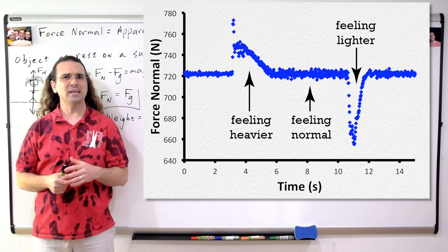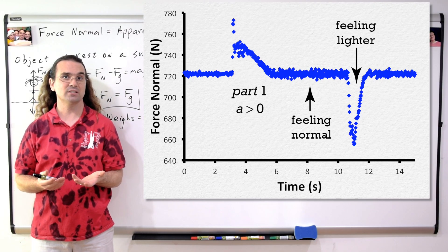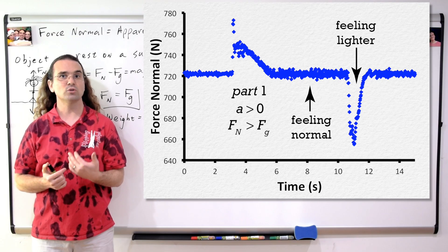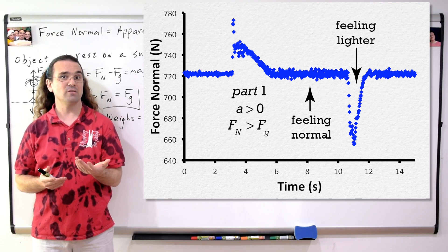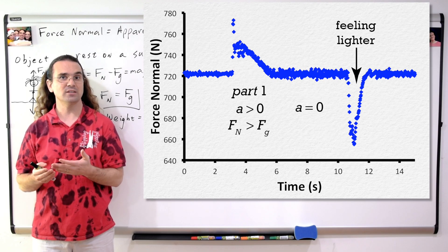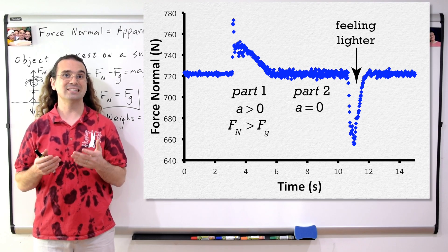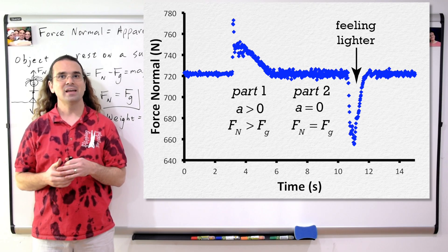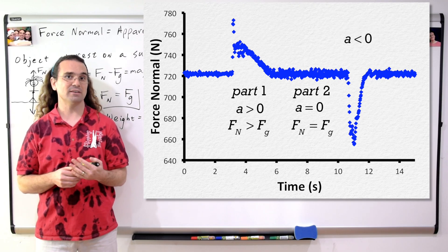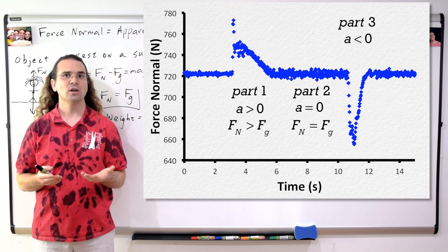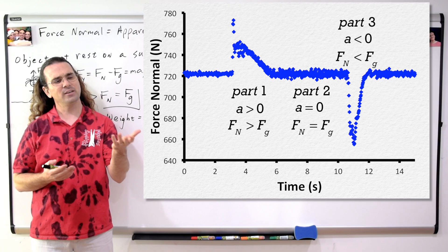At the beginning — let's call it part one — when Bo had an upward or positive acceleration, his apparent weight was more than his weight. Then, as the elevator and Bo were moving at a constant velocity — let's call it part two — his apparent weight was the same as his weight. And at the end, when he had a downward or negative acceleration — let's call it part three — his apparent weight was less than his weight.